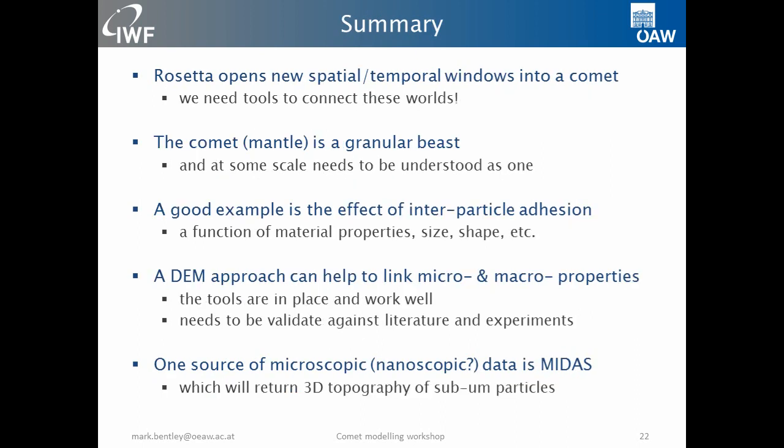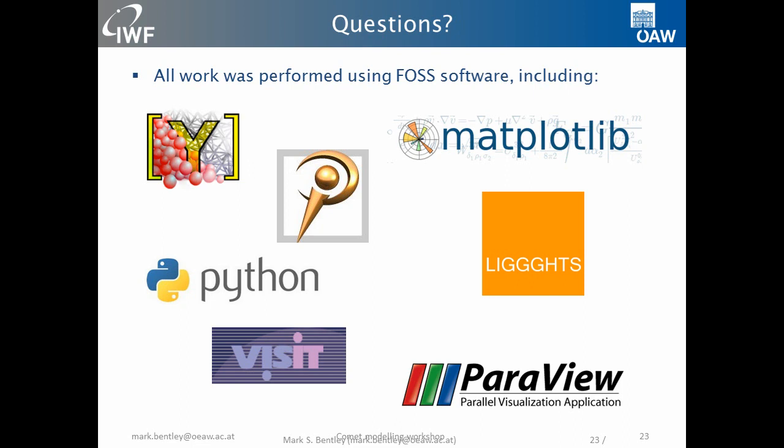I couldn't show you many comet results, and I apologize for that. But the idea, I hope, makes some kind of sense: we need to connect these microscopic properties to the larger scale properties we will have access to with certain instruments on Rosetta, and we need to connect these to the more macroscopic properties that go into our models, in order to get a complete understanding of how comets work. There's a bunch of open source tools that went into this that are all available if you have interest to try it yourselves.